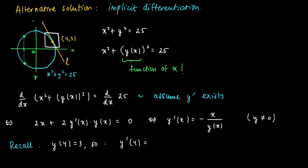Recall that y equals 3. So we may just substitute the value x equals 4 and y of 4 equals 3, so that we get y prime of 4 is minus 4 over 3.